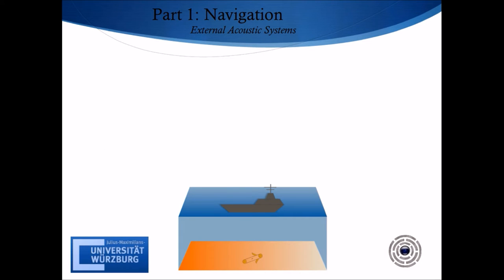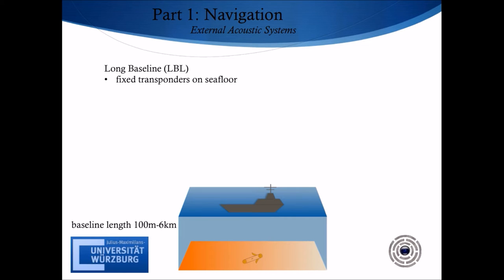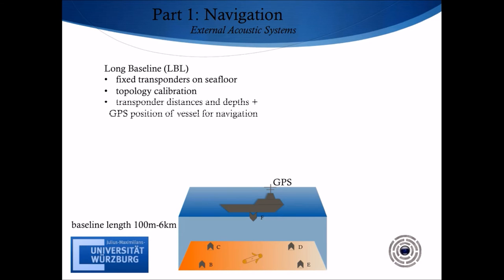The second acoustic navigation type is the long baseline (LBL) with a baseline length of 100 m up to 6 km. To use this navigation technique, the operational area should be known well because an acoustic net of transponders needs to be set up on the sea floor. In addition, a transponder can be fixed on a vessel with a GPS receiver to obtain the target's position in earth coordinates. Error minimization is done by accurate calibration of the topology. To target the object precisely, the distances between the transponders, the information about their depth, and the GPS position of the vessel are used to set up a local inertial frame.